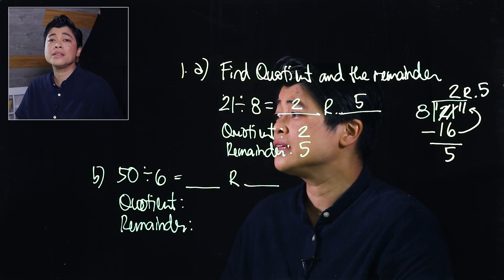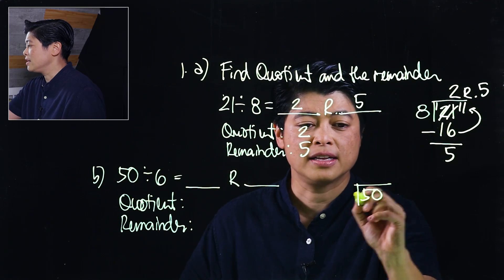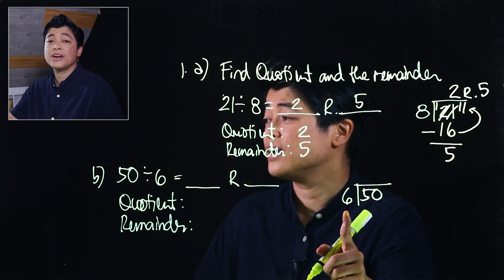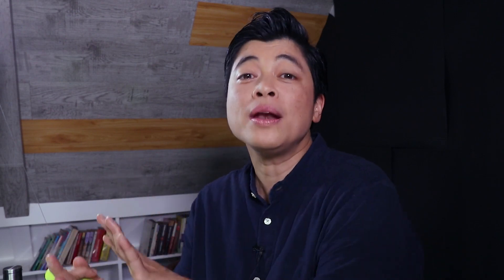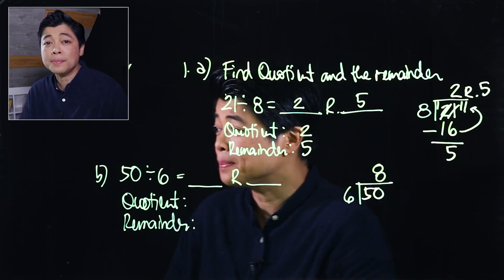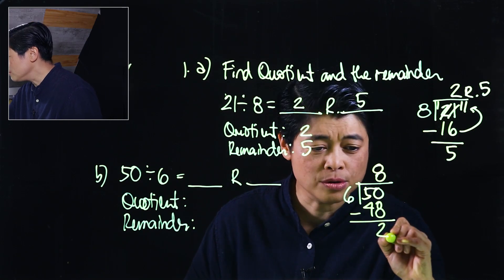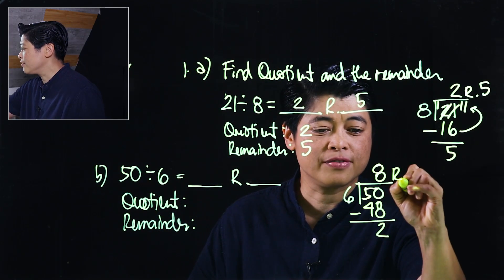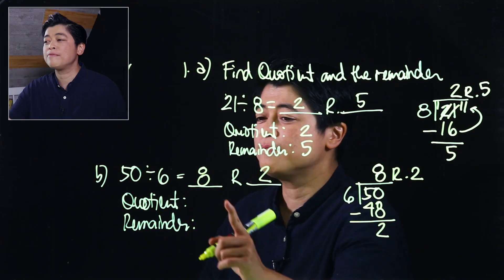Our answer is 2 remainder 5 — the quotient is 2 and the remainder is 5. In simple division there's no remainder, there's only a quotient. For the next problem, 50 divided by 6, we count tables of 6 until we reach 50 without going over: 6, 12, 18, 24, 30, 36, 42, 48 — one more goes over. So we have 8, and 8 times 6 is 48. We subtract: 50 minus 48 is 2, so the remainder is 2.